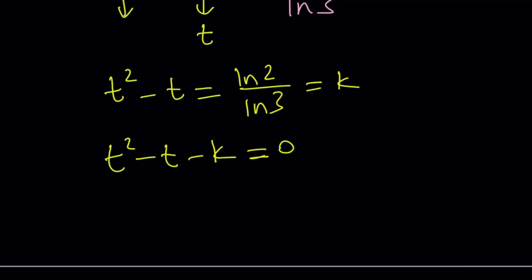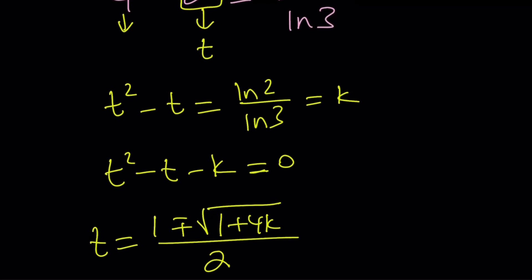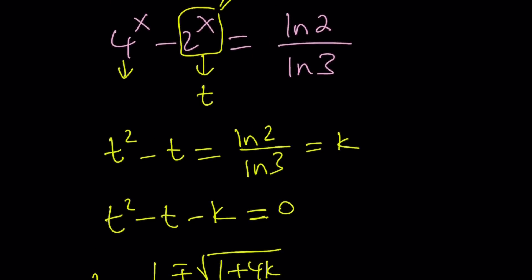So by using the quadratic formula T becomes (-B ± √(B^2 - 4AC)) / 2 which is (1 ± √(1 + 4K)) / 2. There you go, you got the solution for T. We're not looking for T, we're looking for X, but we can always back substitute because we know that 2^x is T and K will be replaced. So now let's do it.